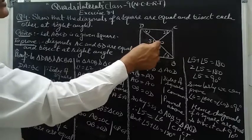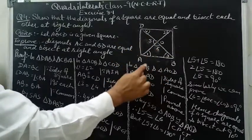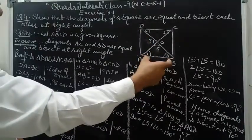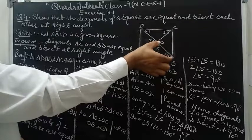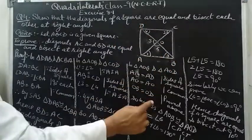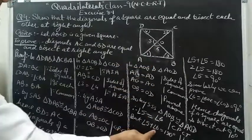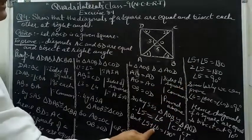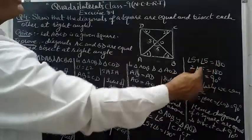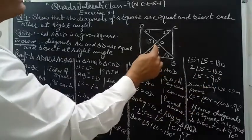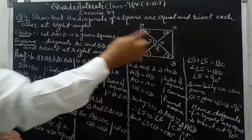For Part 3, in triangles AOB and AOD — AB equals AD as sides of the square; AO equals AO as the common side; OB equals OD as diagonals bisect each other. By SSS, the triangles are congruent. Angle 5 equals angle 6, and since they form a linear pair, angle 5 plus angle 5 equals 180, so angle 5 equals 90 degrees. Hence the diagonals of the square are equal and bisect each other at right angles. Thanks for watching.